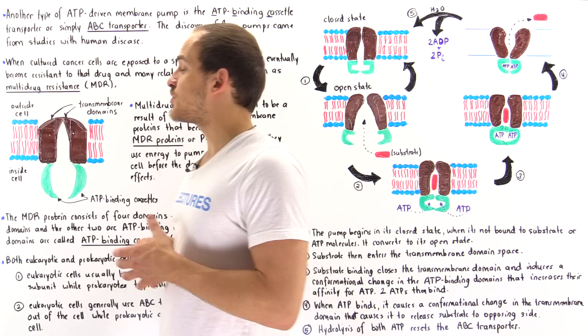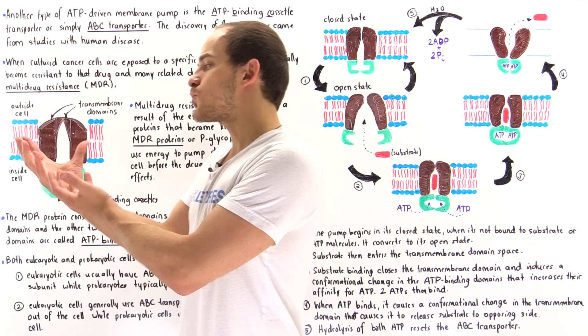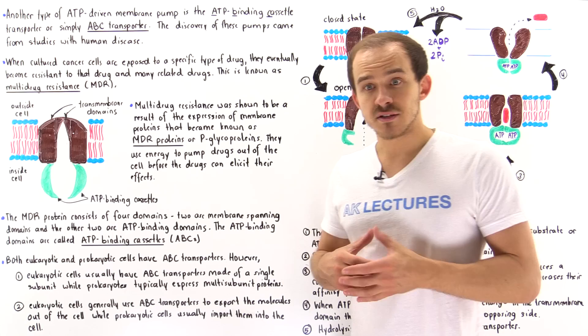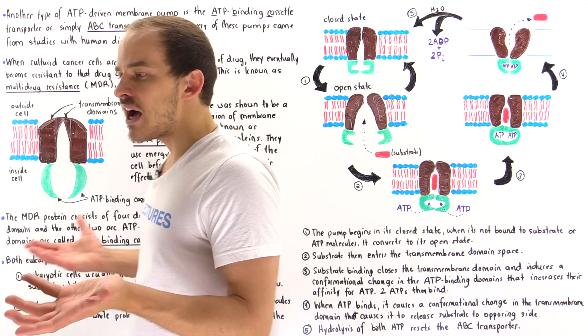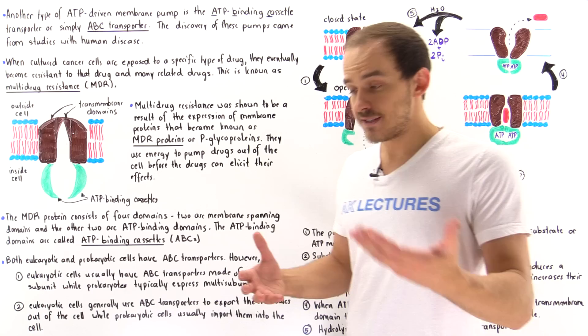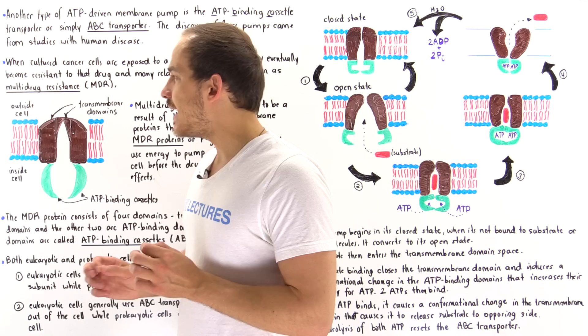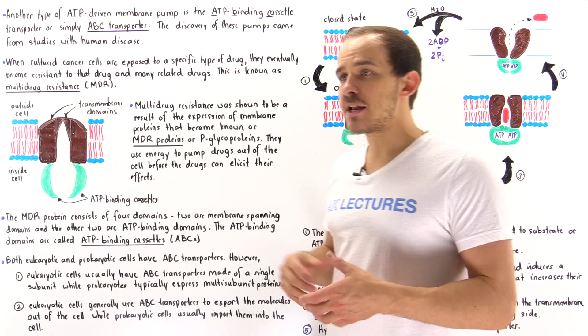This important class of ATP-driven proteins was discovered as a result of our study of human disease — specifically cancer. We essentially took a tumor, extracted cancer cells, and grew those cancer cells in a petri dish. The cancer cells were exposed to some type of drug, and initially the drug carried out its effect and killed off some of those cancer cells. But over time, those cancer cells gained multi-drug resistance, or MDR.